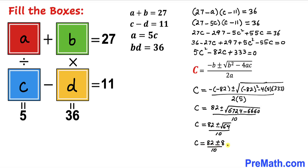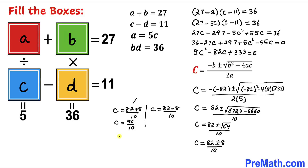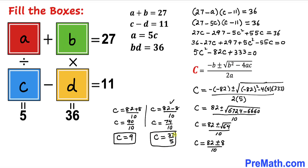Simplifying, we get C equals (82 plus or minus 8) divided by 10. Splitting into two cases: C equals (82 plus 8) divided by 10, which gives C equals 9, and C equals (82 minus 8) divided by 10, which gives C equals 37/5.